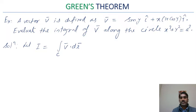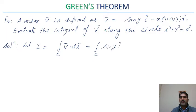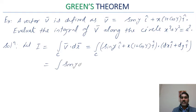We already know that the line integral is written as ∫ v · dr. If you have not studied this, go back to the lecture on line integrals and path integrals. We need to compute v · dr. The vector v has components sin(y) i + x(1 + cos y) j, and dr in the XY plane has components dx i + dy j.